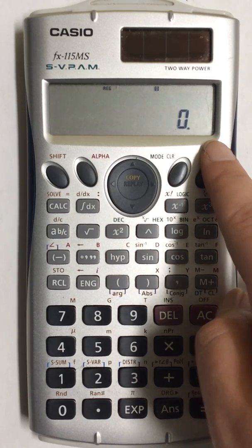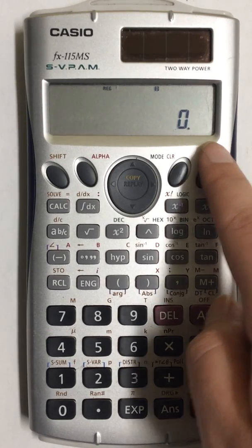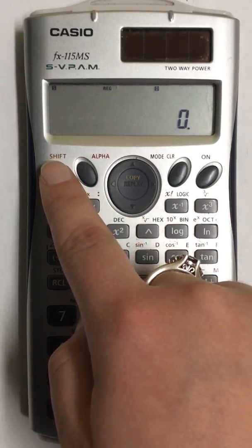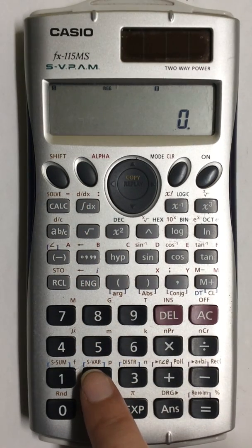Once my screen is cleared, I'm now going to find the correlation coefficient. I do that by first pressing the shift button and then coming down and pressing number two, which says SVAR.